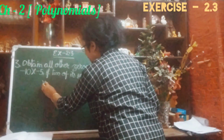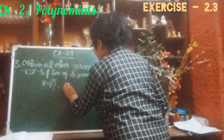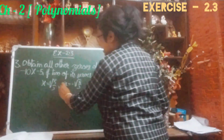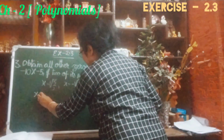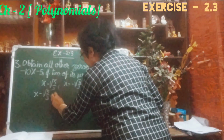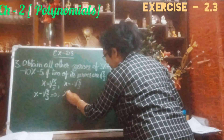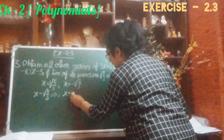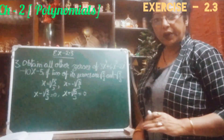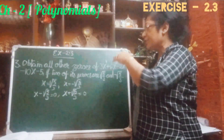First, they have given x = √(5/3) and one more: x = -√(5/3). These two are given, so these are the zeros. We can write this as: if we change the side, x - √(5/3) = 0. And again we can write for the other one: x + √(5/3) = 0. These two we got. Now what we can do — we will multiply these two so that we will get another factor of this polynomial.